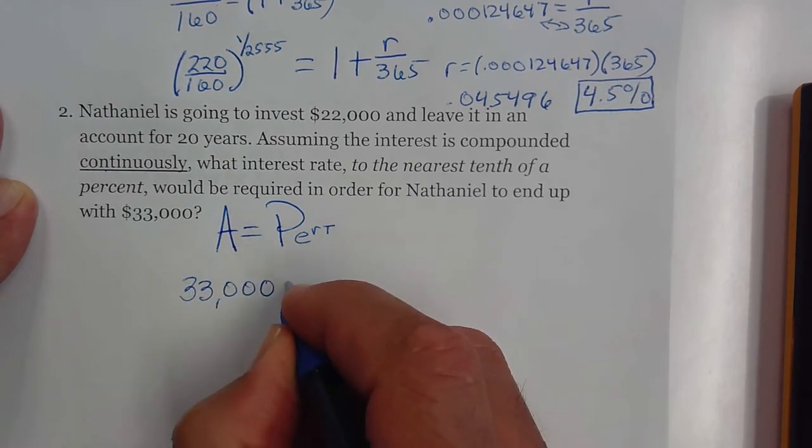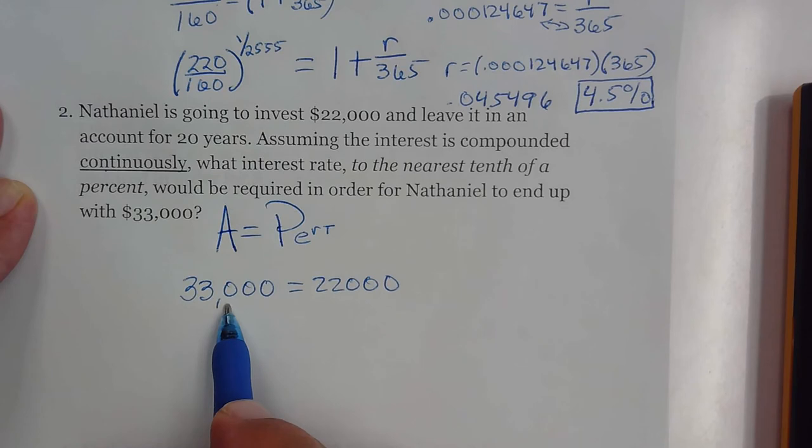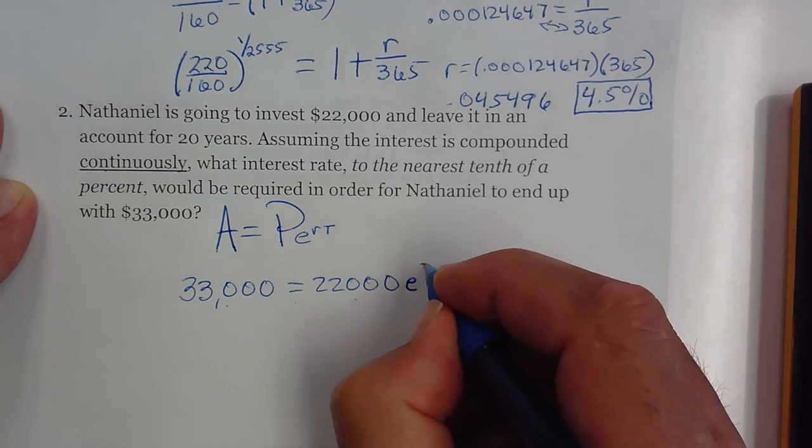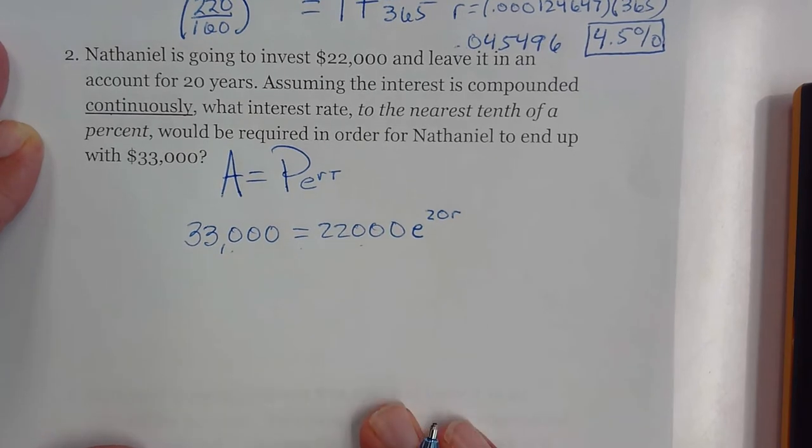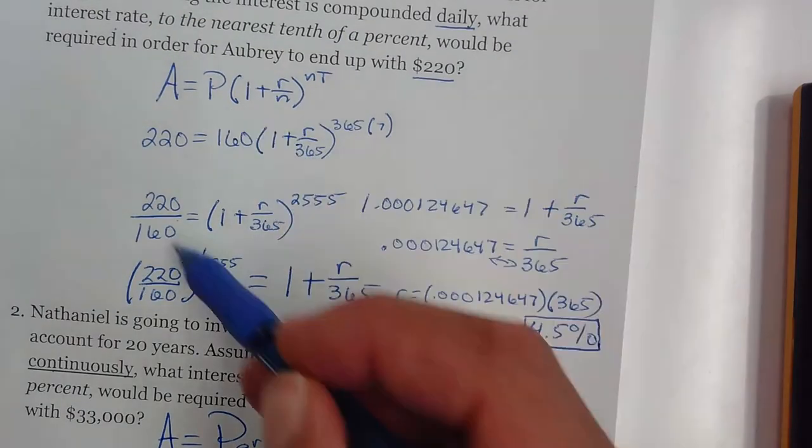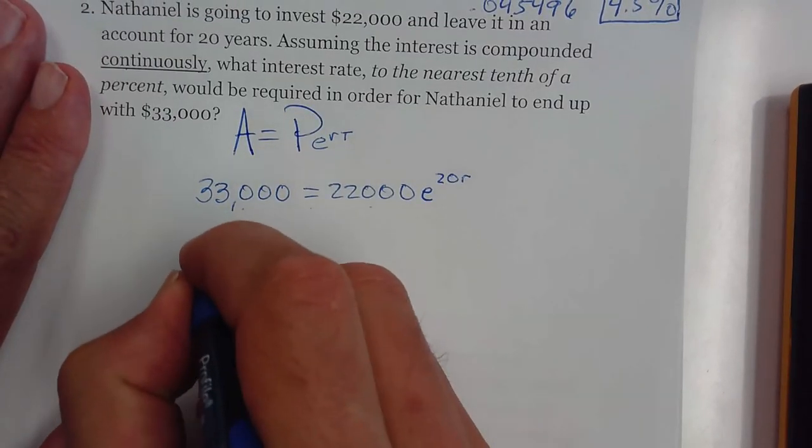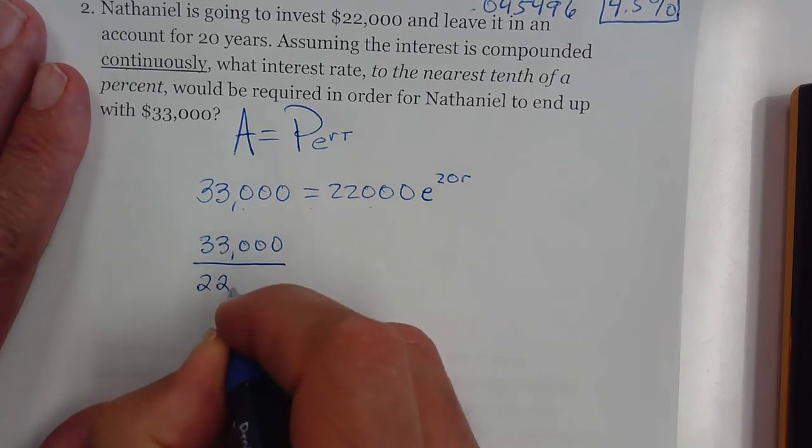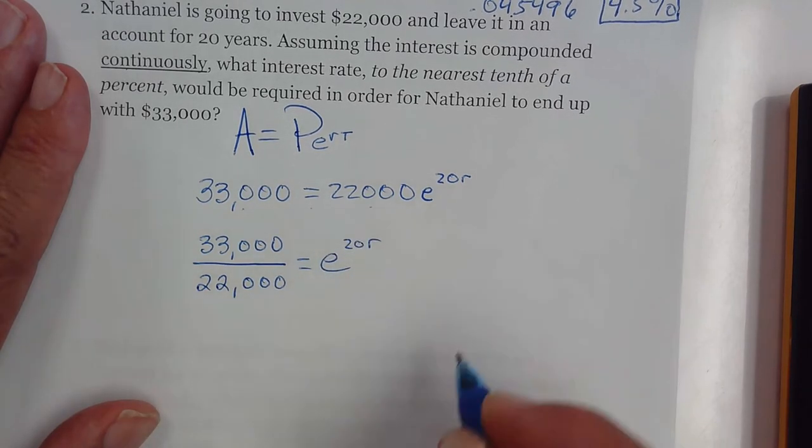So we're going to set this up, placing the numbers where they go. Final amount equals the initial amount times e raised to 20 times the rate. These problems are much easier, continuous ones, many fewer steps than that convoluted process. First step after you set it up is you want to take your final amount, divide it by your initial amount, and that equals e raised to 20 times the rate.